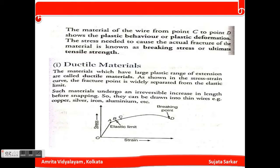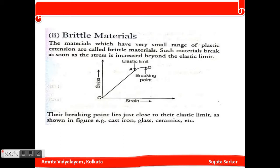The next topic is brittle materials. The material which has a very small range of plastic extension is called a brittle material. Such materials break as soon as the stress is increased beyond the elastic limit. The breaking point lies very close to the elastic limit, as shown in the figure. Examples include cast iron, glass, and ceramics.